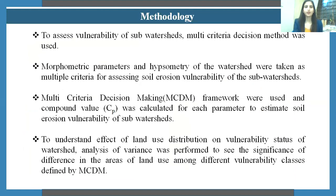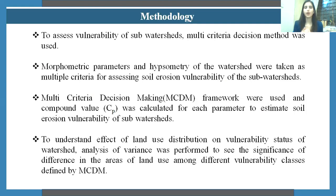This study was conducted in two stages. In the first step, we assessed soil erosion vulnerability using a multi-criteria evaluation framework, taking two criteria — morphometric parameters and hypsometry — to assess the soil erosion vulnerability status of all 21 subwatersheds. The compound value was calculated for all 21 subwatersheds and vulnerability classes were defined for each. The second part was to understand the role of land use distribution on the vulnerability status of the watershed.